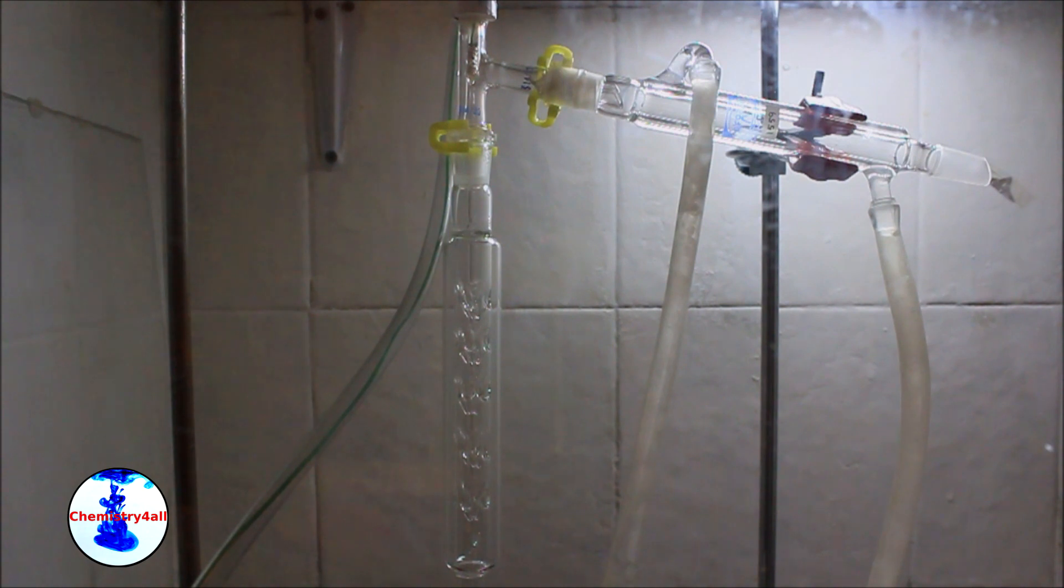Then, a regular fractional distillation setup is assembled. This setup is actually the same used for a simple distillation, except for the fact that a fractionating column is placed between the flask and the T-head.